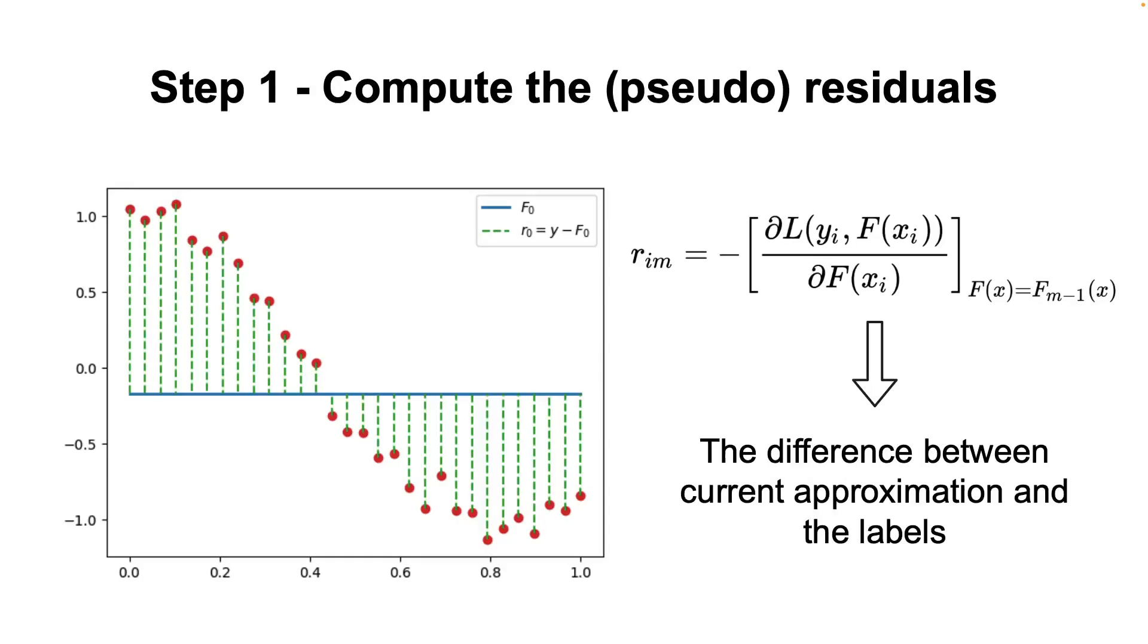The next step is to compute the gradient or, as they are often called in gradient boosting, the pseudo-residuals. For our study case, this is simply the difference between our current predictions and the labels. Again, if you want to see why this is true, check out the links in the description.